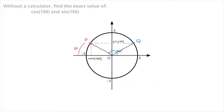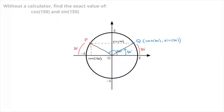Since Q is the mirror image of P across the vertical axis, we can see that the angle that point Q corresponds to will be the same as the angle we initially measured here — that was 30 degrees. So I can go ahead and add that 30 degrees right here. In other words, point Q corresponds to 30 degrees, and therefore, by definition, point Q has coordinates cosine of 30 and sine of 30.